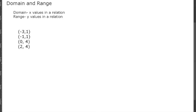In this video I'm going to explain domain and range. Domain are the x values in a relation and the range are the y values in the relation. So looking at the ordered pairs (-3,1), (-1,1),